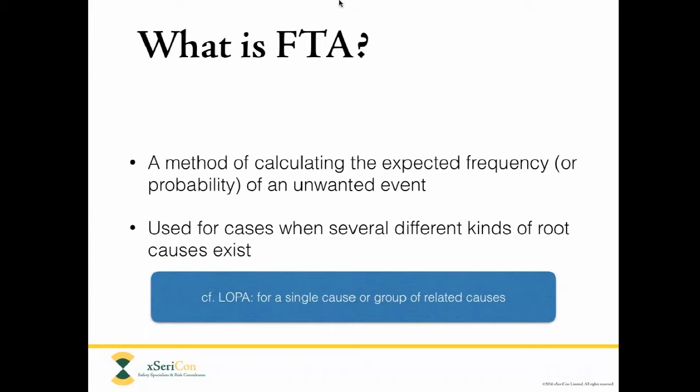Fault tree analysis is basically a frequency calculation method. Whenever we're talking about safety, we're interested in trying to measure risk, because risk is the thing we want to control. Risk is basically something bad happening to something we don't want harmed — people, the environment, assets, or cost-related issues. Risk is a measure of how bad the harm can be, measured in terms of how often it can happen — frequency — and how severe it will be — severity.